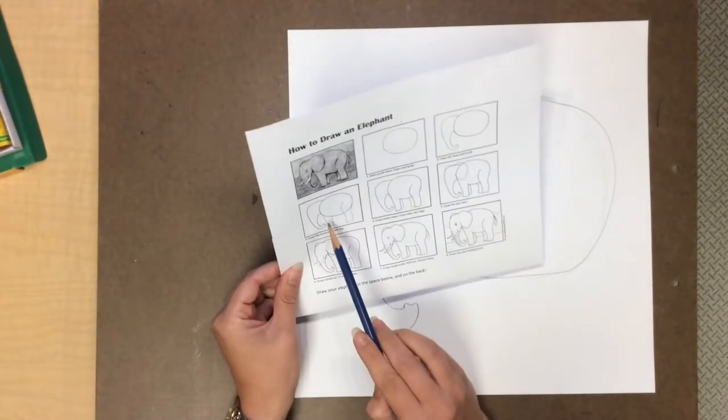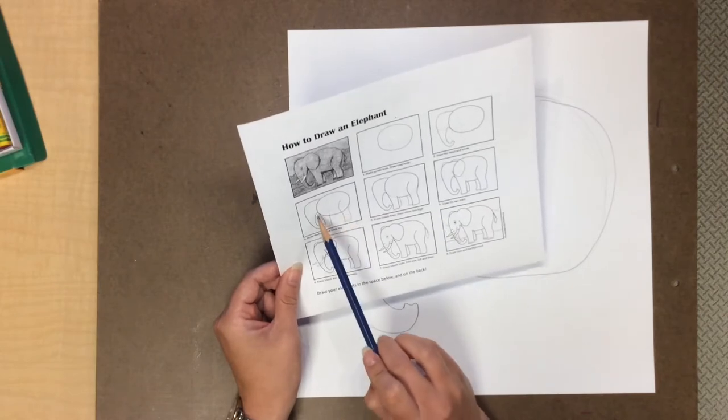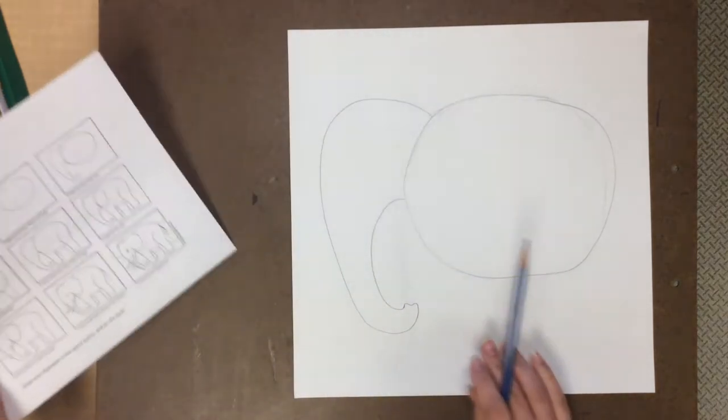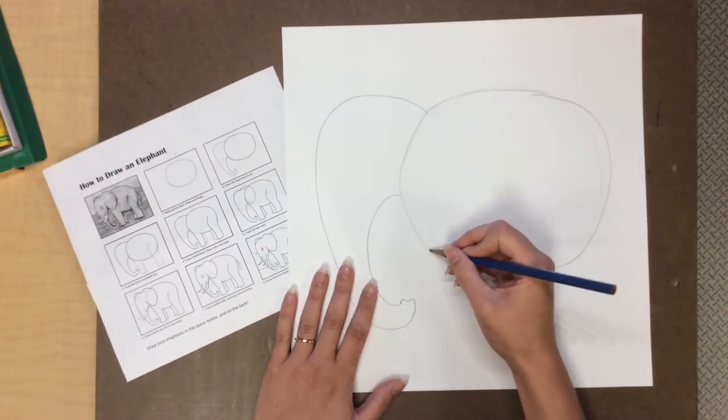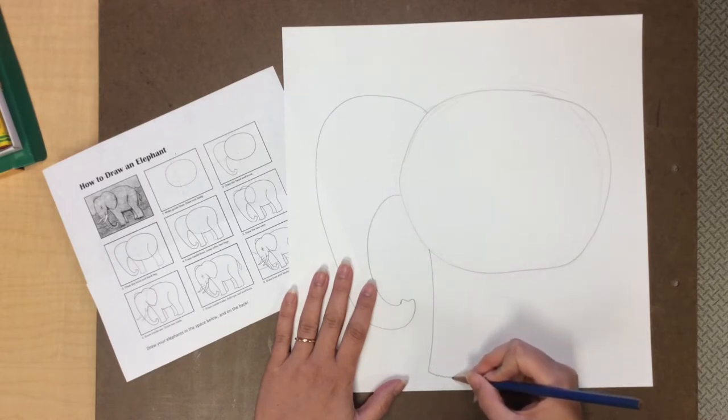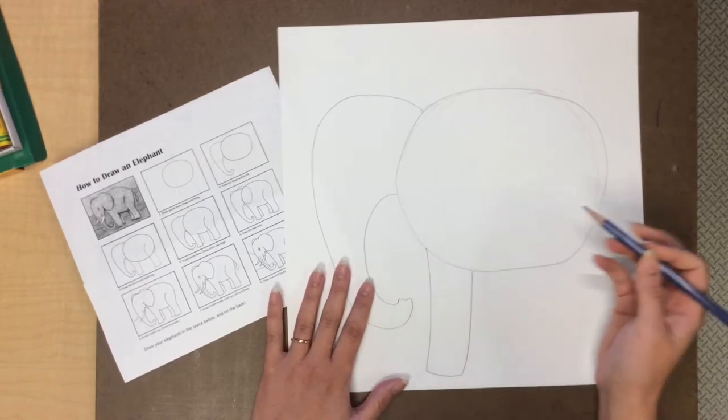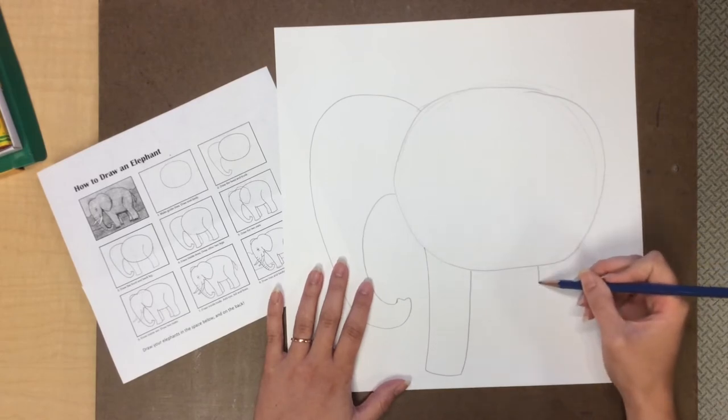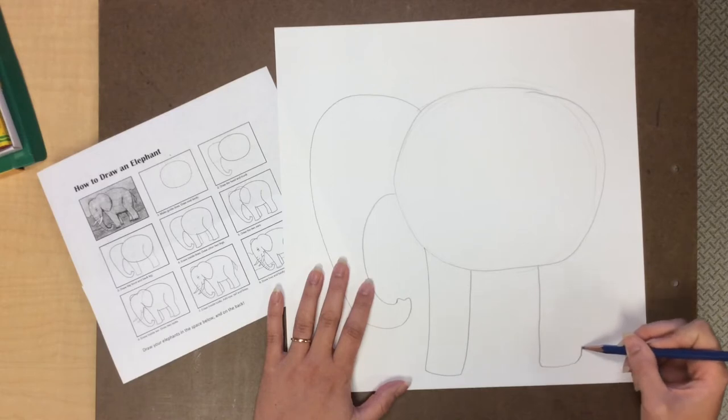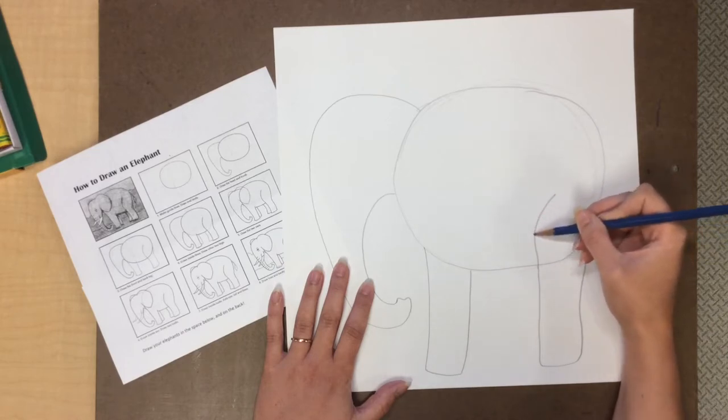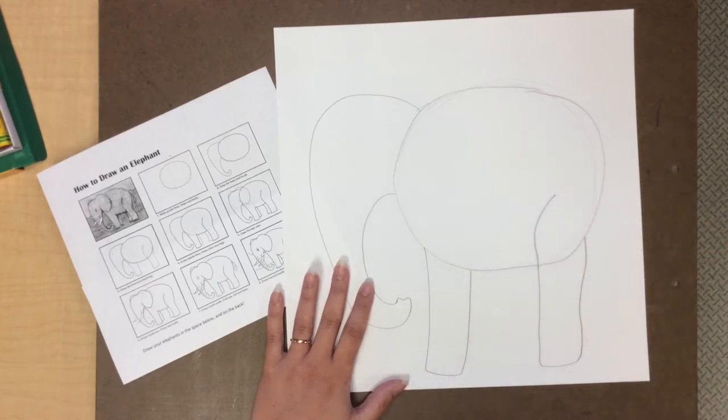Now the next step shows some elephant legs. The legs are sort of like rectangles but once again not perfect rectangles. So first I'm gonna do the front leg and then the back leg looks like it comes like this but they've also drawn this line up a little bit to show the elephant's leg muscle.